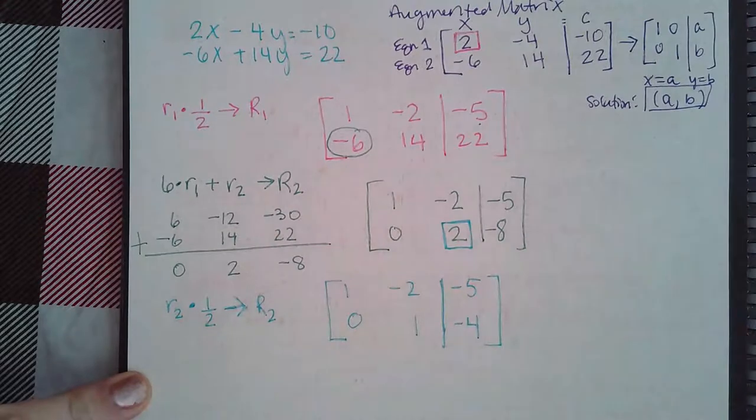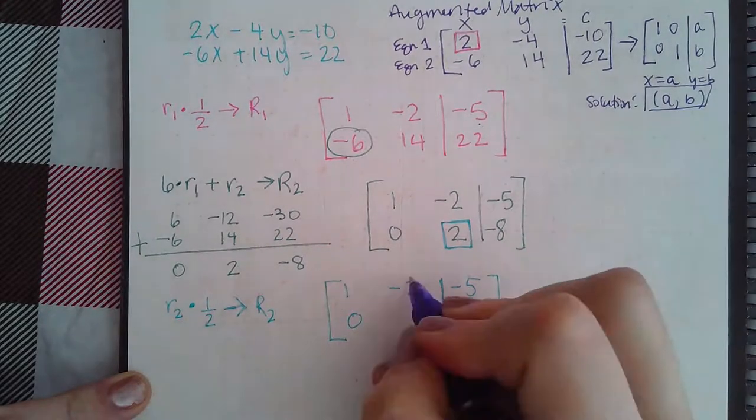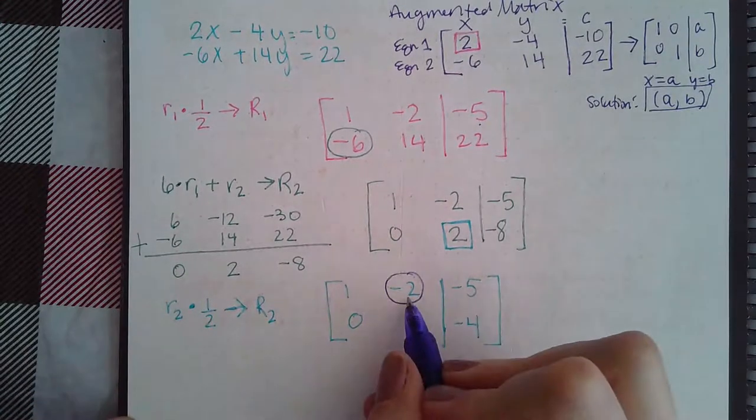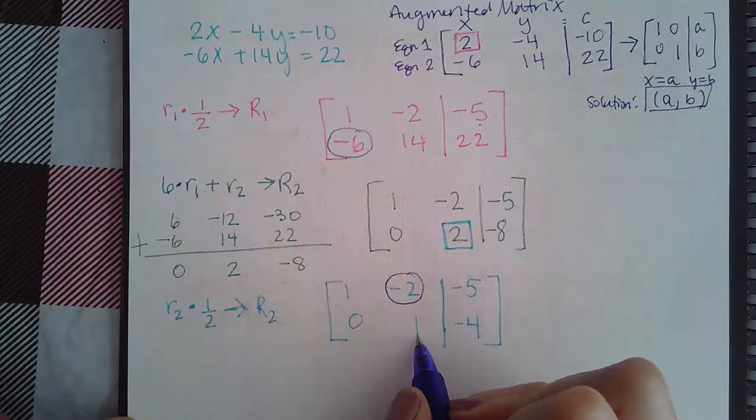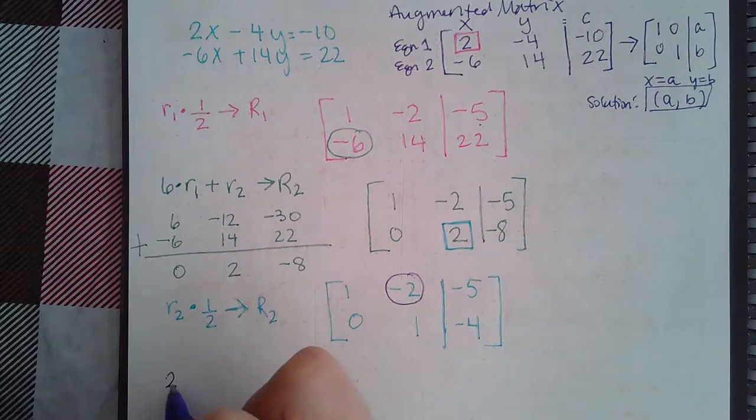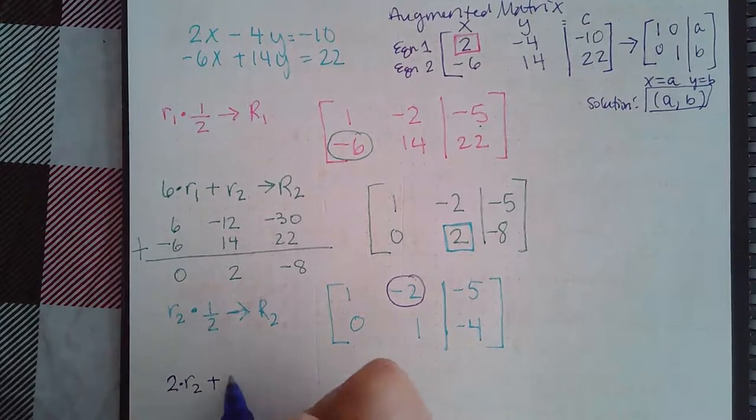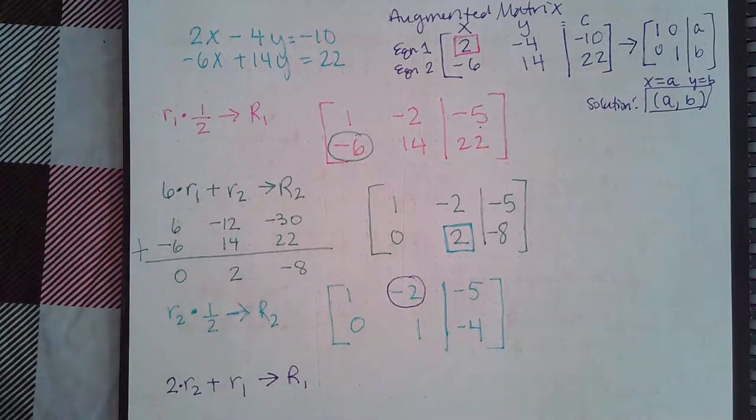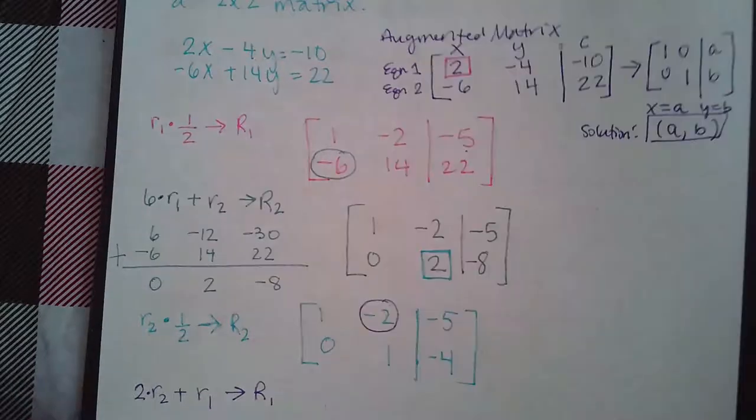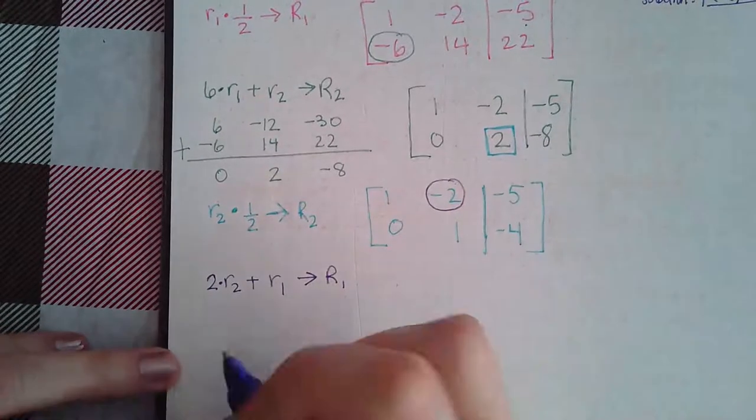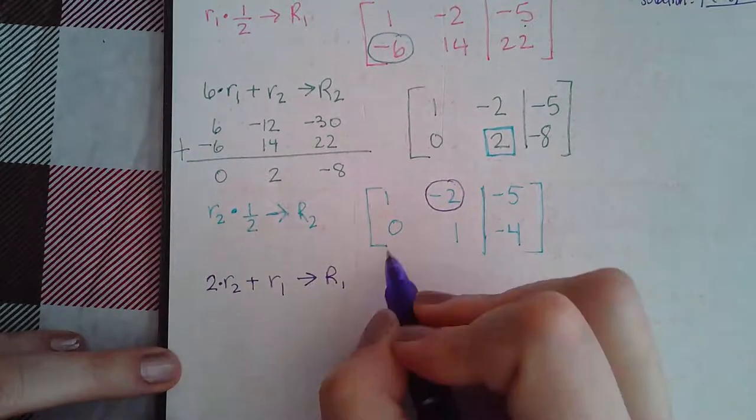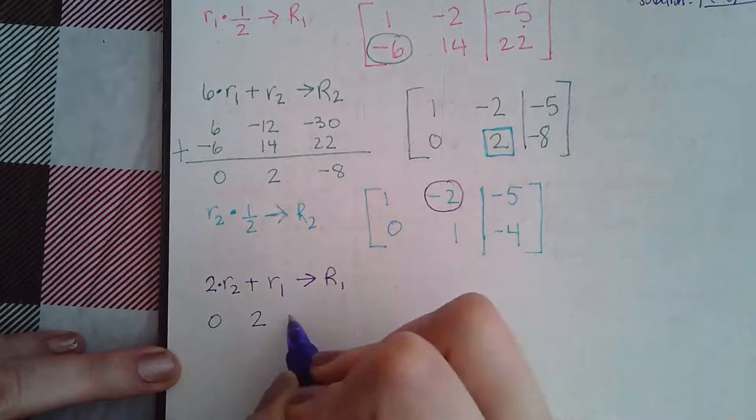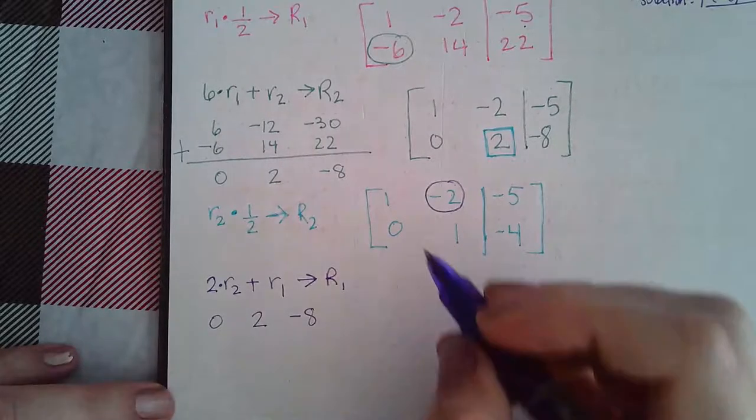Next thing I need to do is I need to use this 1 to change this guy to a 0. So, if that's a negative 2, that means I need to turn this guy into a positive 2. So, I'm going to say positive 2 times row 2 plus the row 1 should give me my new row 1. So, let's see what we have here. Positive 2 times row 2. 2 times 0 is still 0. 2 times 1 is 2. And 2 times negative 4 is negative 8. Row 1 goes underneath.